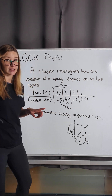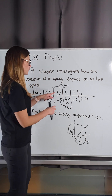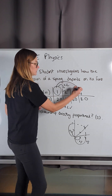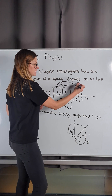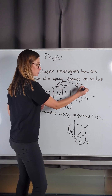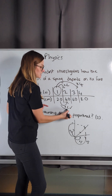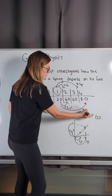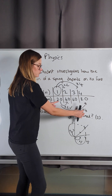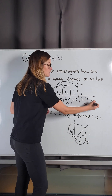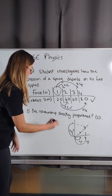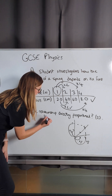But we're going to triple-check this. Let's look from 1 to 4. When 1 goes to 4, it gets multiplied by 4, so that should mean this number also gets multiplied by 4. 2 times 4 is 8, so yes, it is directly proportional.